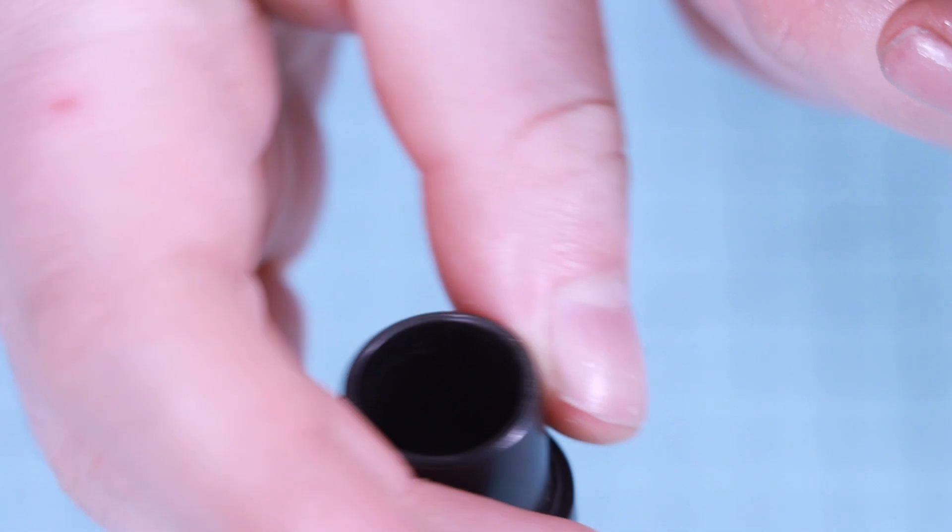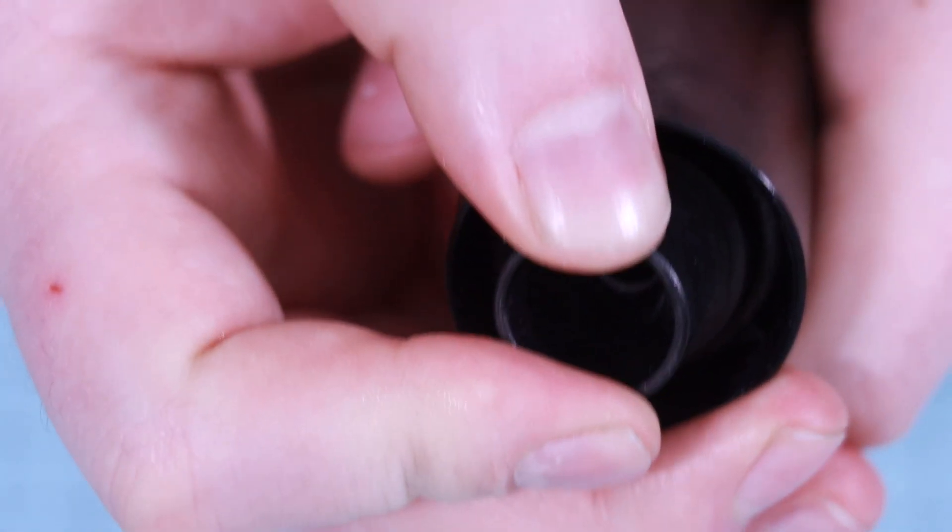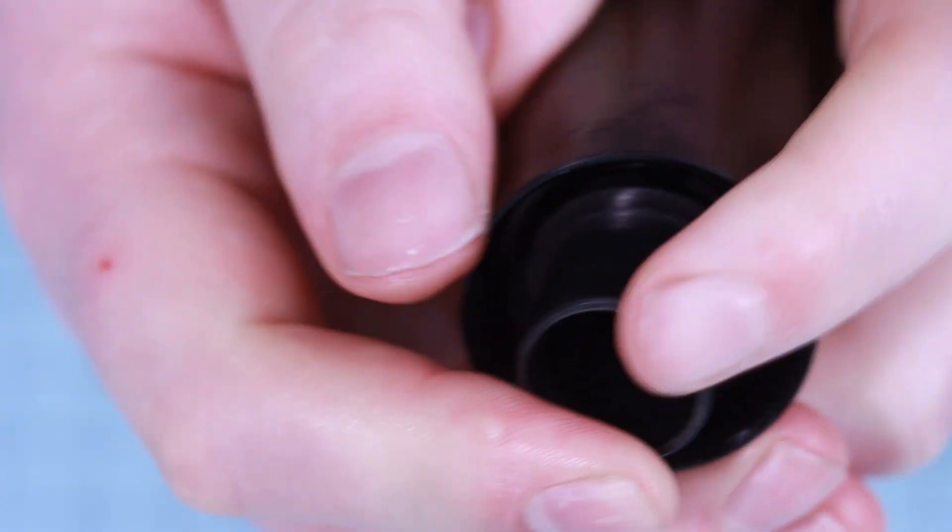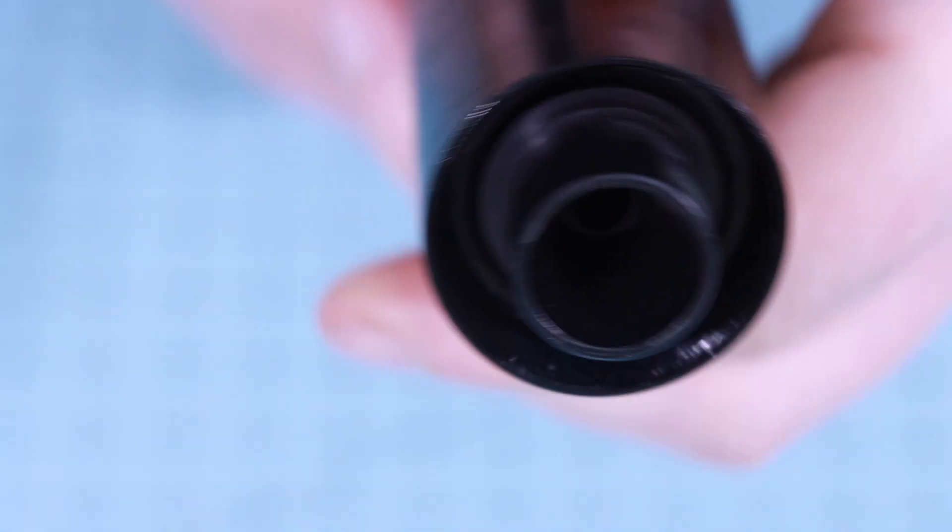Now let's install the nozzle. It sits just inside of the o-ring. It's a tight fit so you'll need to apply firm pressure. I'm double checking to make sure it's fully seated and centered.